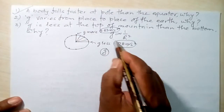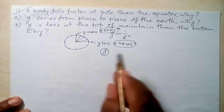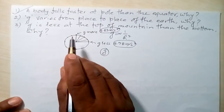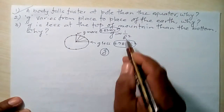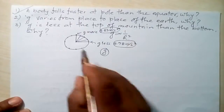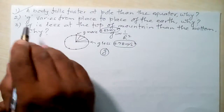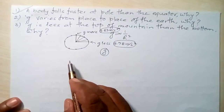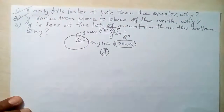Since g is inversely proportional to the square of the radius of the Earth, if the radius is less then g will be more at that place, and if the radius is more then g will be less. This is why the value of g varies from place to place on the Earth. That is the answer to the second question.